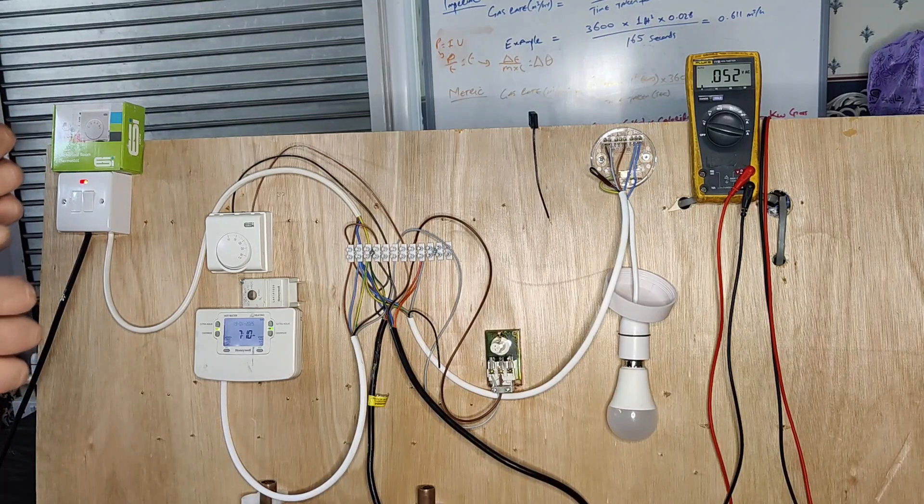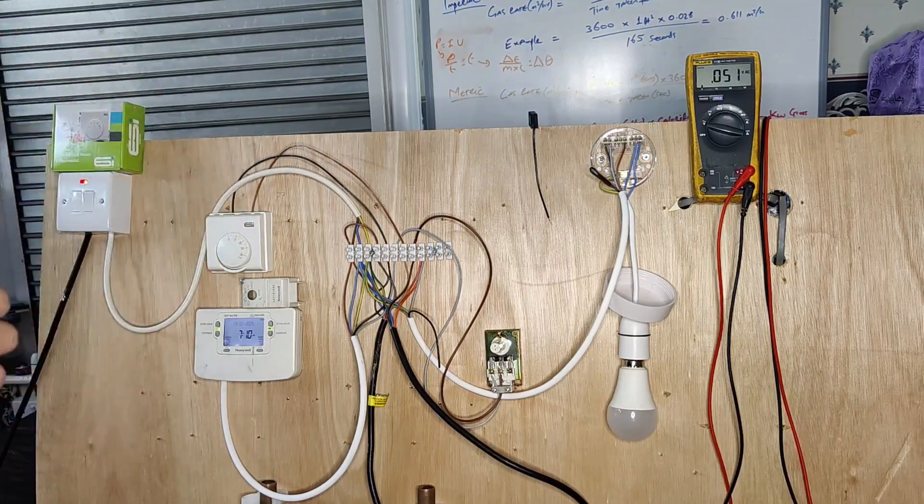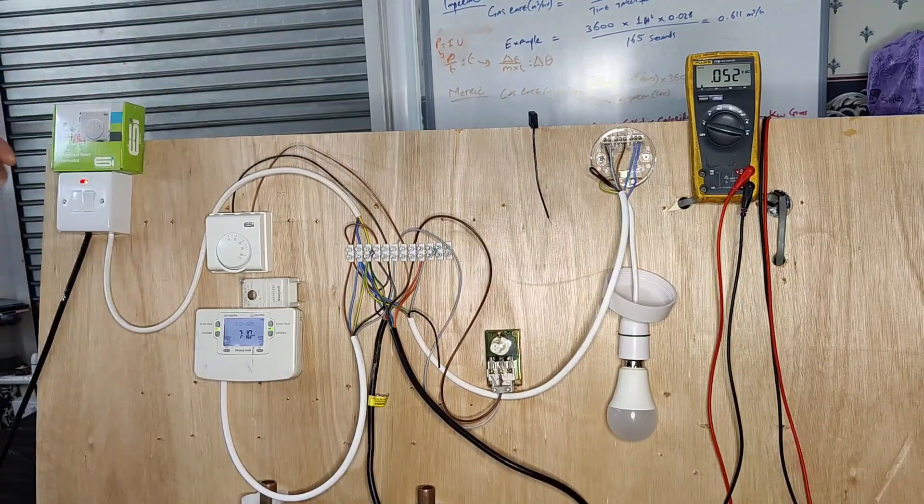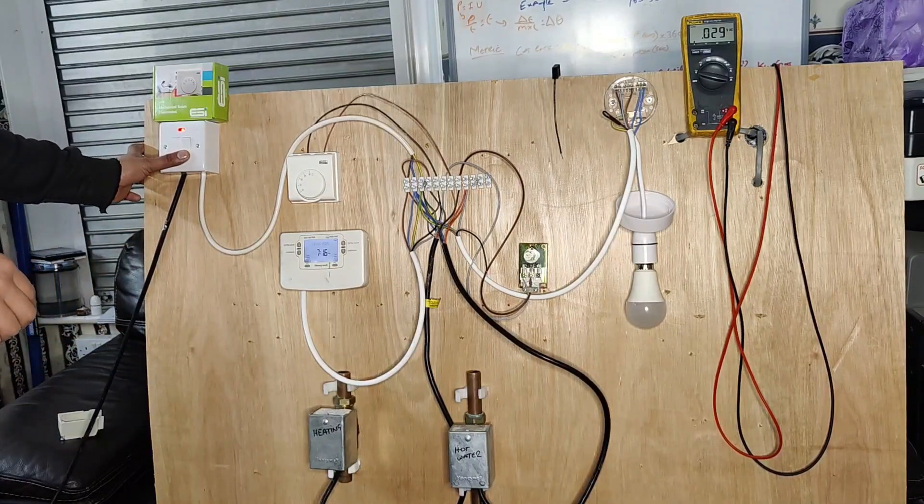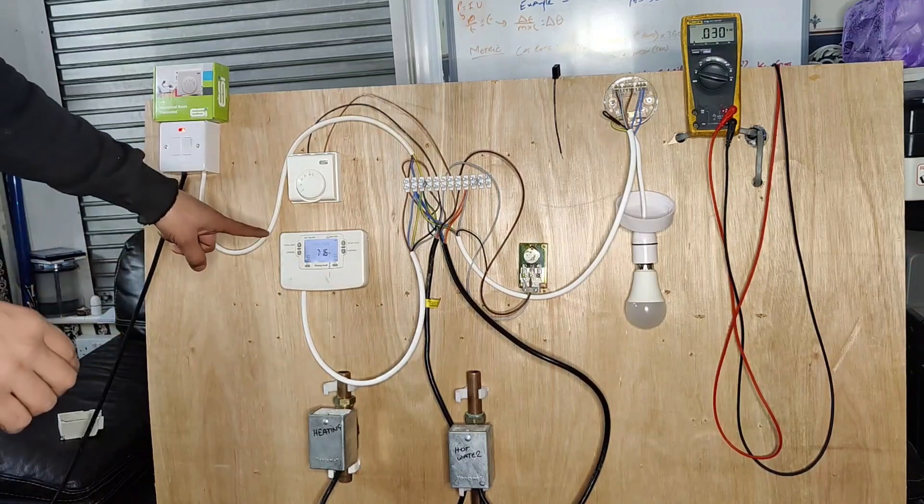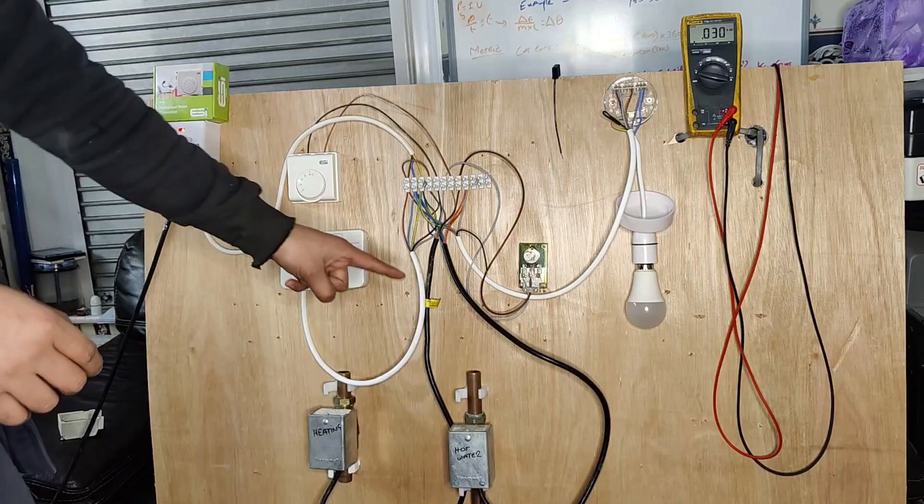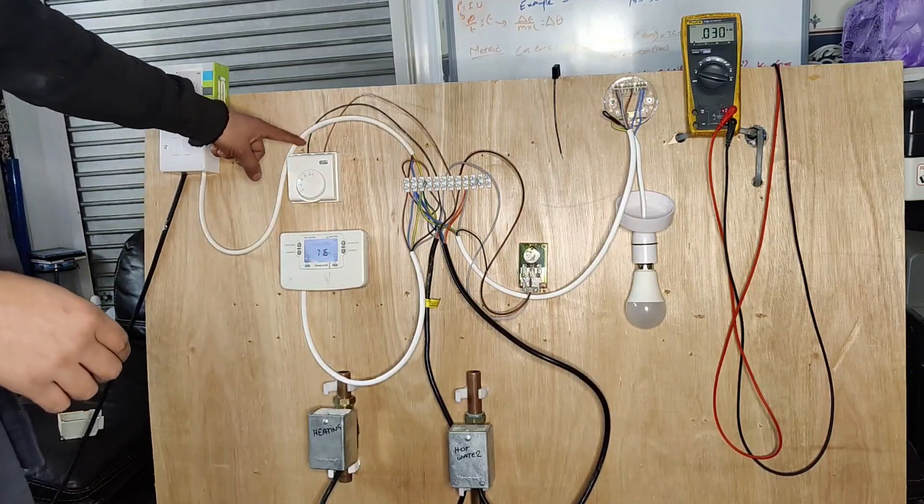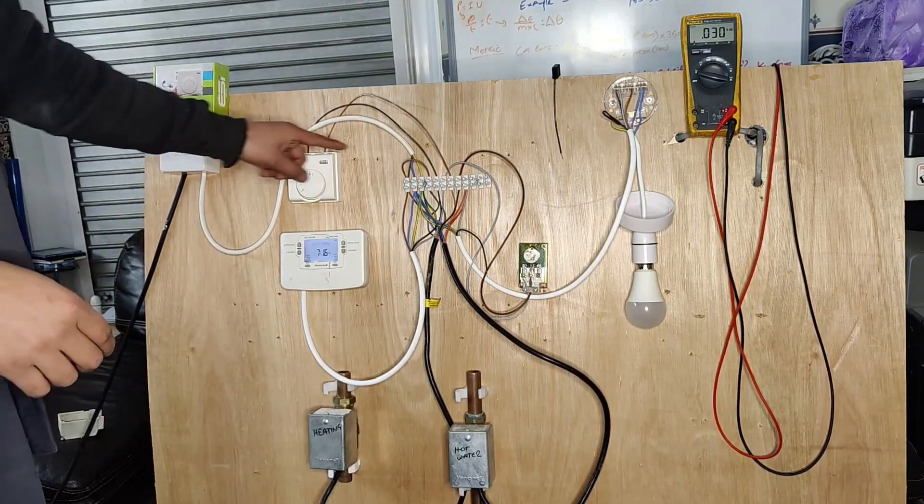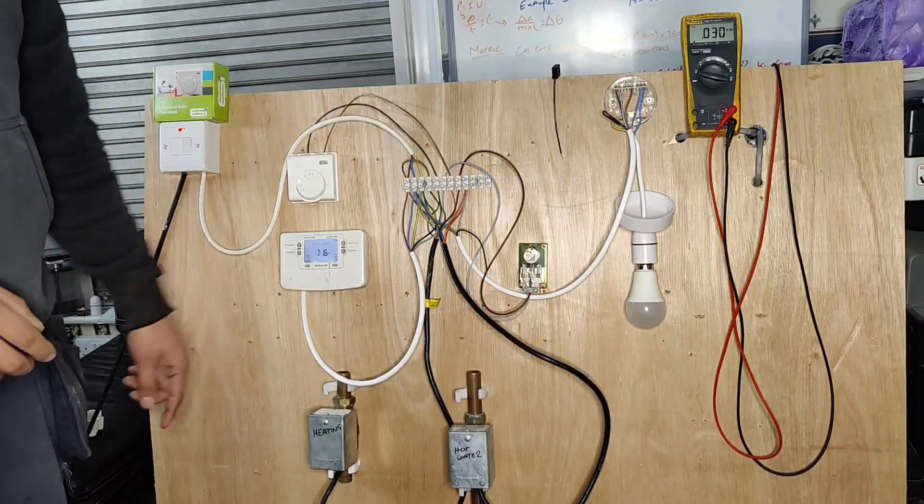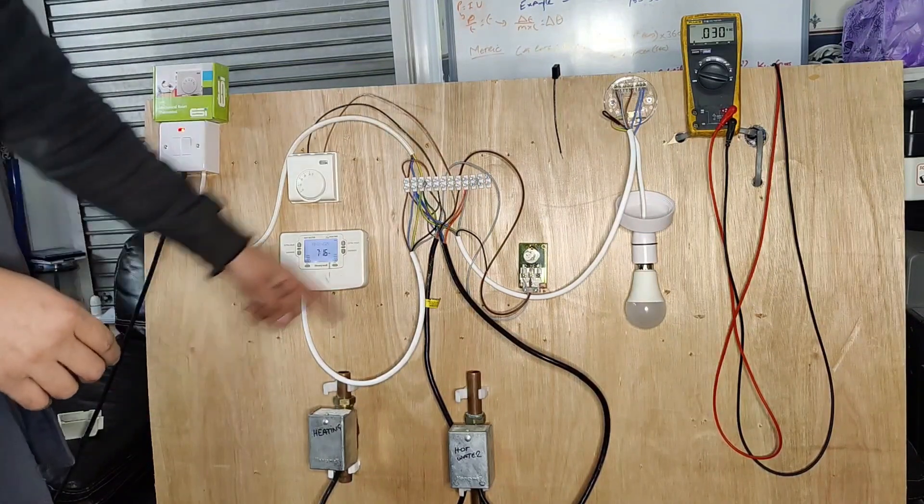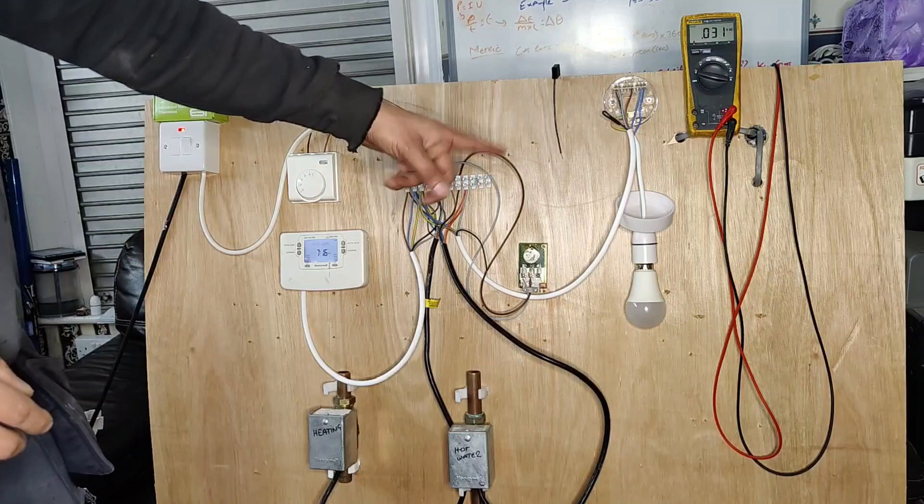Our fuse spur is already turned on, programmer's energized, it's a typical S-plan setup with heating zone valve and hot water zone valve. We have a room thermostat for heating and a cylinder stat for hot water cylinder, and we have a bulb there demonstrating a boiler.